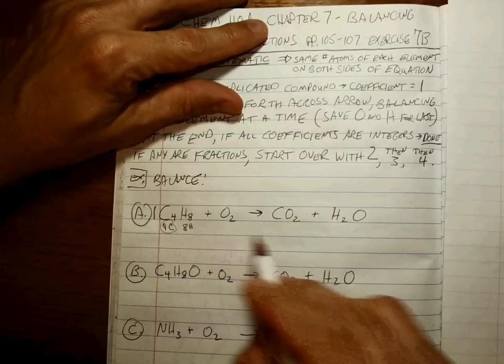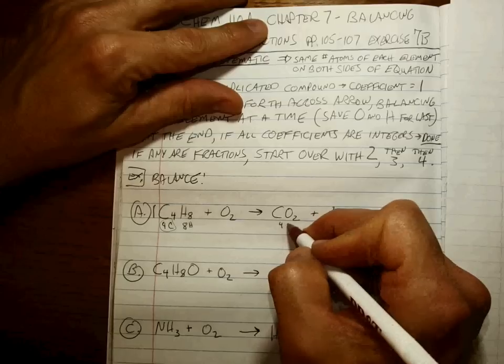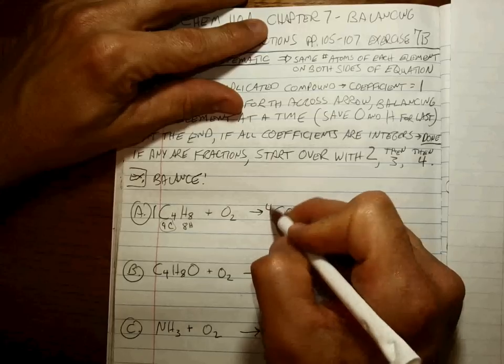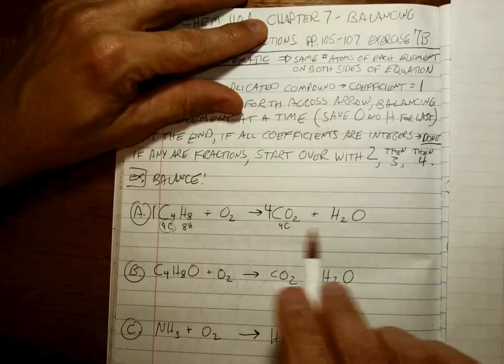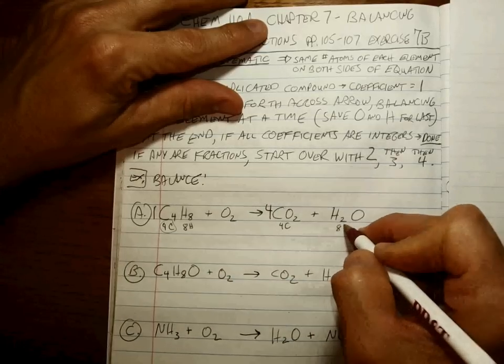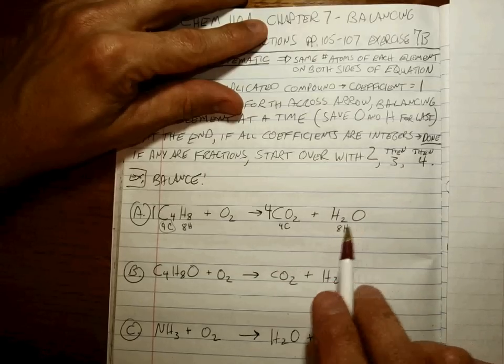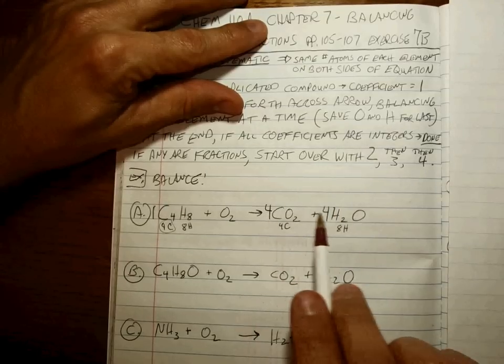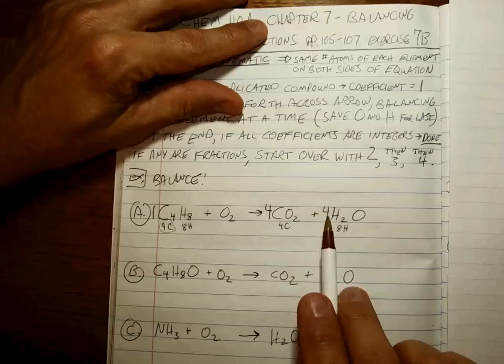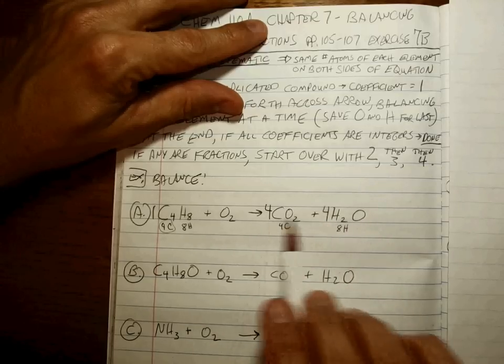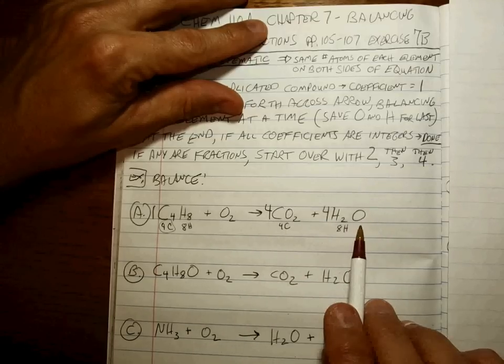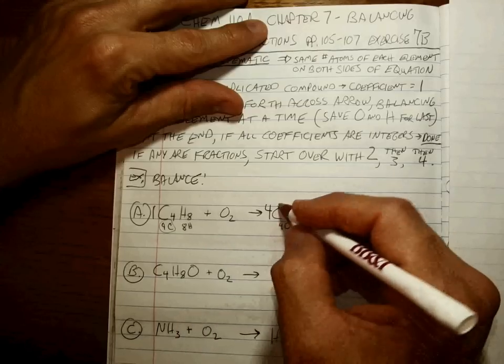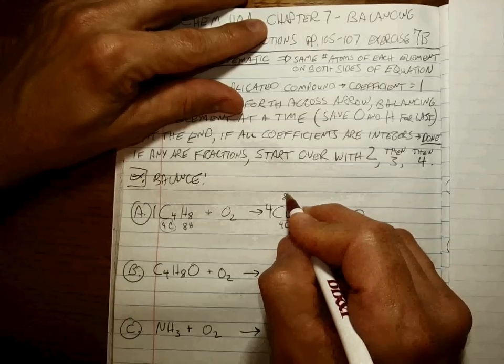To get 4 carbons on this side, since this is the only compound that has carbon, clearly we need 4 of these. To get 8 hydrogens on this side, clearly, because this is the only compound that has hydrogen on this side, this has to be a 4. Now that we have these two coefficients, all the coefficients on the product side, we can add up the oxygens and see if we can get the oxygens to balance.